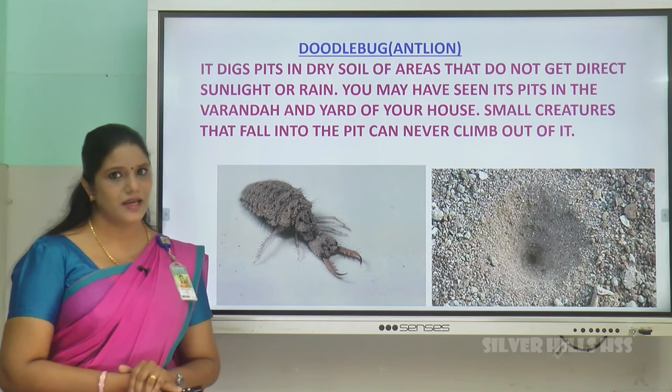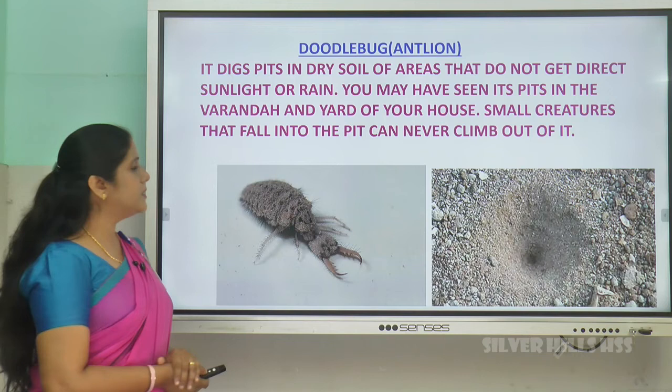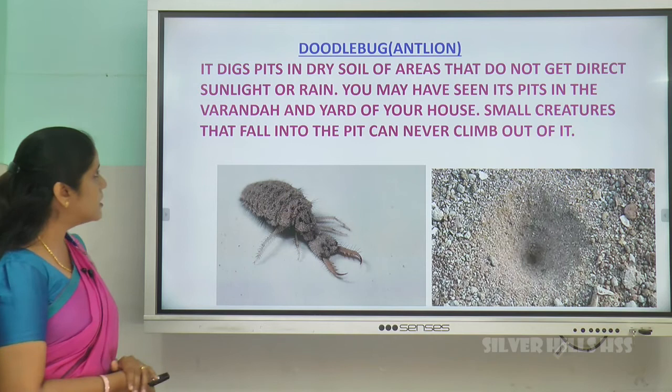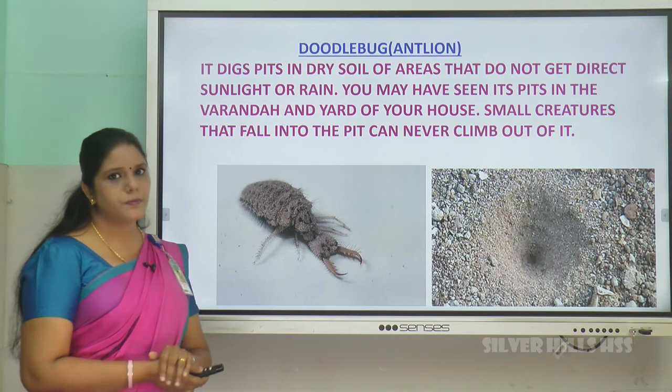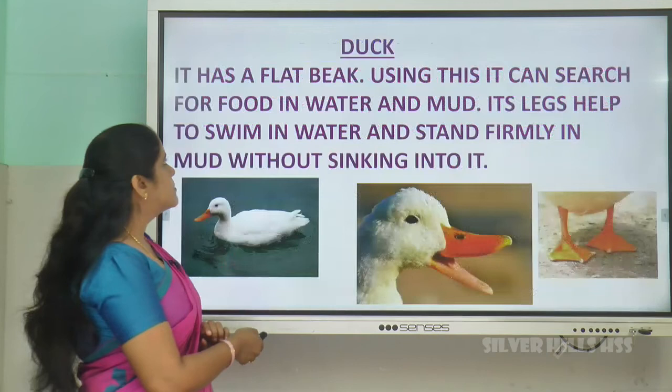Then comes the doodlebug. The doodlebug is also called ant lion. It digs a pit in dry soil, in areas that do not get direct sunlight or rain. You may have seen these pits in verandas or the yard of a house. Some creatures that fall into that pit never climb out because it is very dry soil. This is how the doodlebug catches its prey.